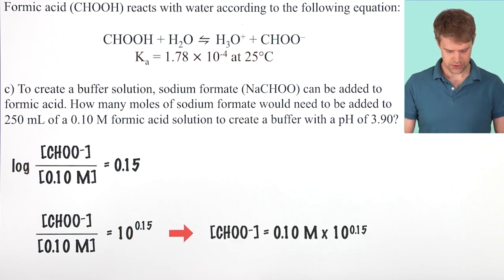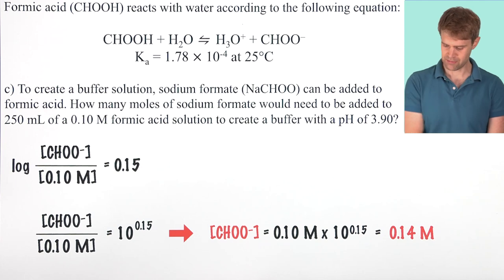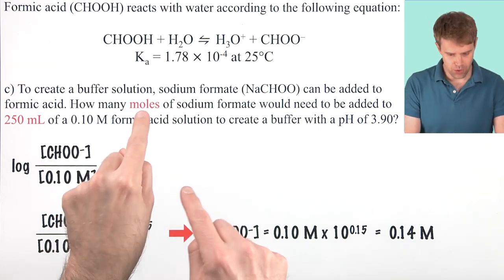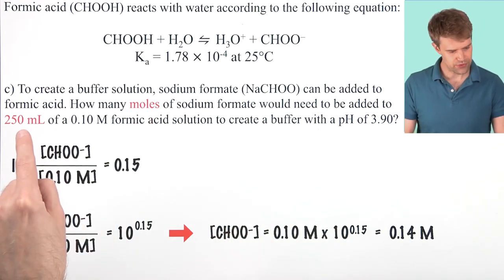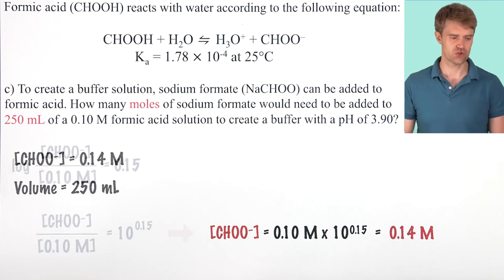We can just multiply this value by this value. There it is. Solve for formate. Do some math. 0.14 molar. So, our concentration of formate is 0.14 molar. But now, we have to finish the problem. How many moles of sodium formate must be added to a 250 milliliter solution to achieve this concentration?